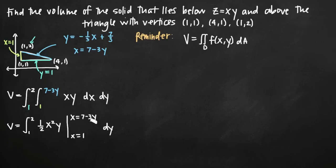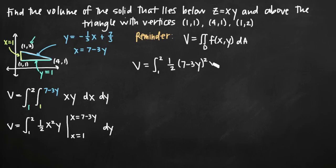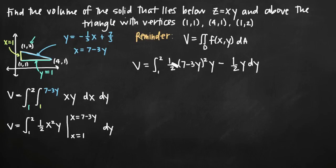Evaluating on the interval 1 to 7 minus 3y, volume equals the integral from 1 to 2. Plugging in 7 minus 3y for x gives one-half times (7 minus 3y) squared times y. Subtracting the lower limit: plugging in x equals 1 gives one-half times 1 squared times y, which is just one-half y. Notice that all x's have been eliminated and only y's remain.